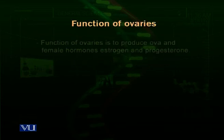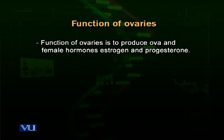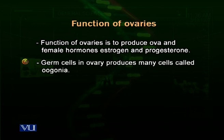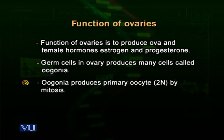The function of the ovaries is to produce ova and female hormones called estrogen and progesterone, which develop female-like characteristics. In the process of oogenesis, just like in the testes, ovaries have germ cells. Not all cells of the ovary can produce an ovum — only the germ cells can. These germ cells divide by mitosis into a primary oocyte with a 2N number of chromosomes.